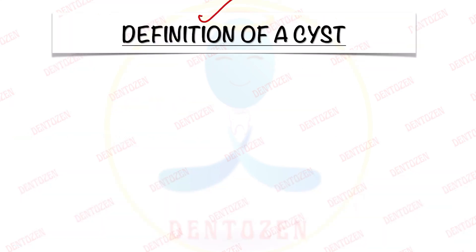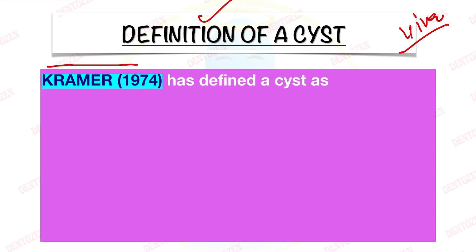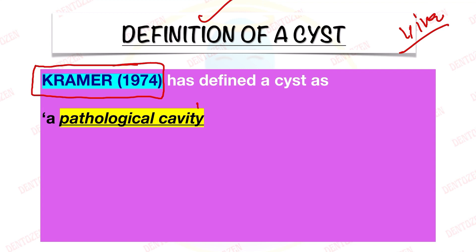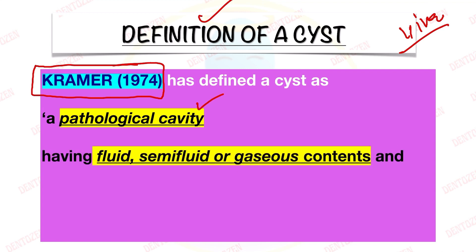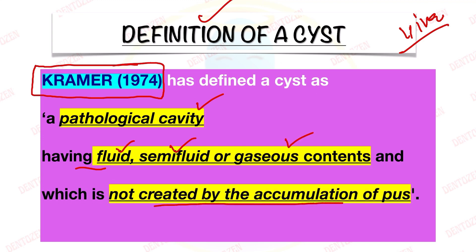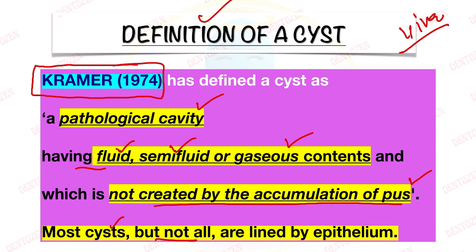Now we come to the definition of a cyst, which is a very very important viva question. Your examiner will want to know who gave this definition. This definition was given by Kramer in the year 1974, and it has four parts. A cyst is a pathological cavity, having fluid, semi-fluid, or gaseous contents, it is not created by accumulation of pus, and epithelium may or may not be present — most cysts but not all are lined by epithelium. You can remember this definition by dividing it into these four parts.